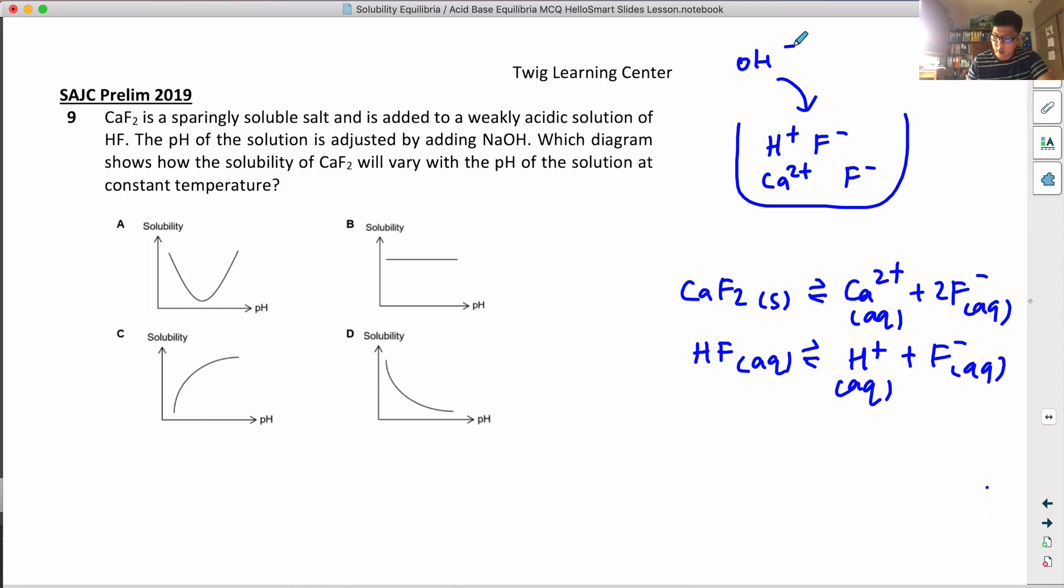When you add OH⁻, it will react with the H⁺. You can see this is an HF acid, so H⁺ concentration will fall. The equilibrium will shift to the right according to Le Chatelier's Principle, so F⁻ concentration will increase.